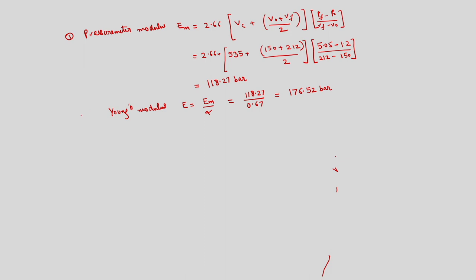The undrained shear strength is: Cu = PL/9 = 10.5/9 = 1.16 bar. So without collecting any soil samples, by simply measuring field volumes and pressures at different loading levels, we determined the pressuremeter modulus, Young's modulus, and undrained shear strength of the subsoil at 4.2 m depth using the pressuremeter test.